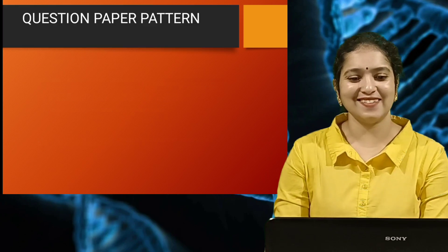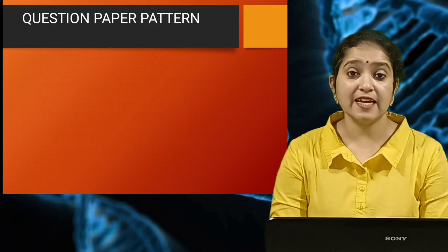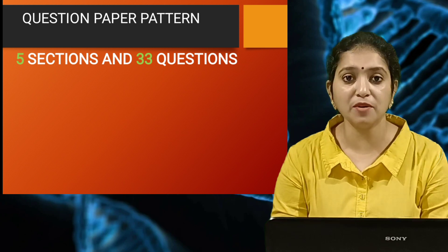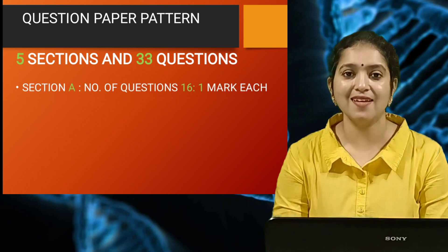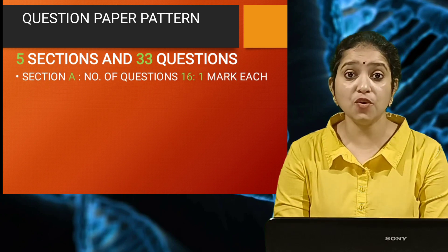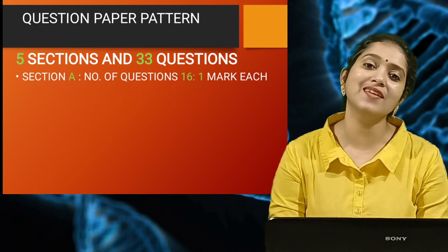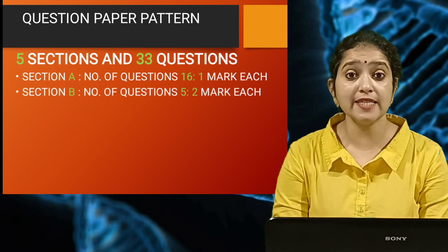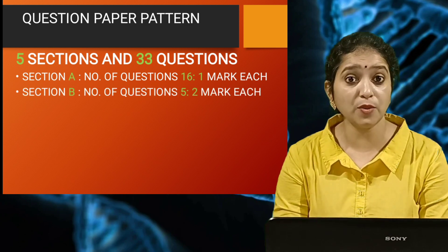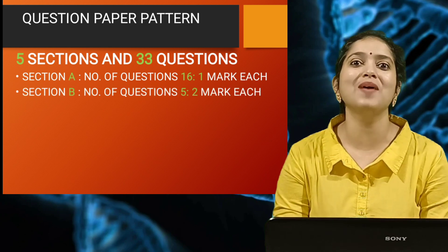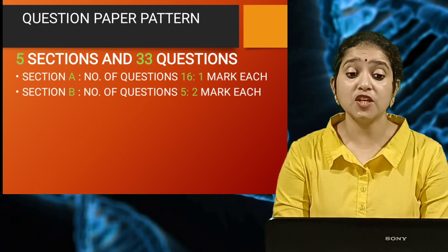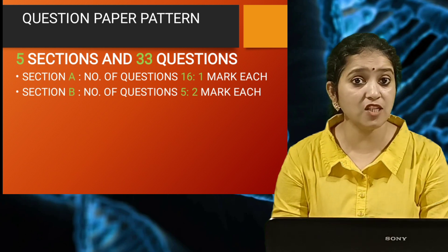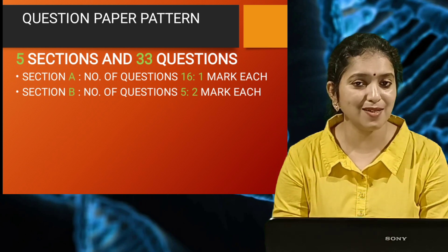So let's get started with the Question Paper Pattern. As we all know, there are 5 sections and 33 number of questions. Section A consists of MCQs, including Assertion and Reason type of questions. Section B has short answer type 1 questions, with 5 questions each carrying 2 marks.